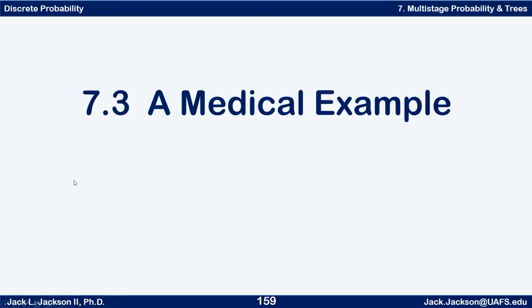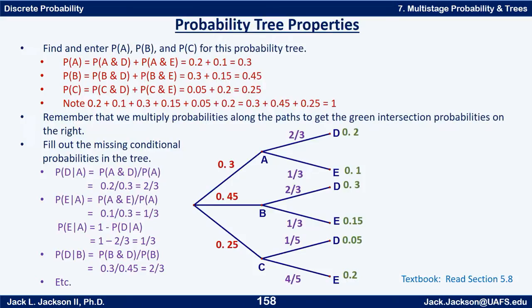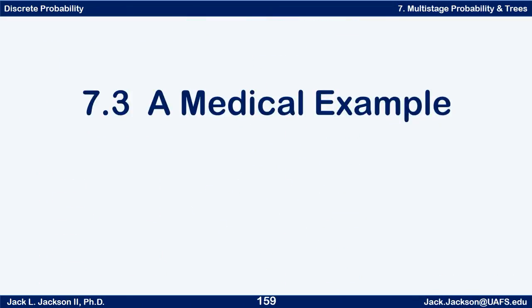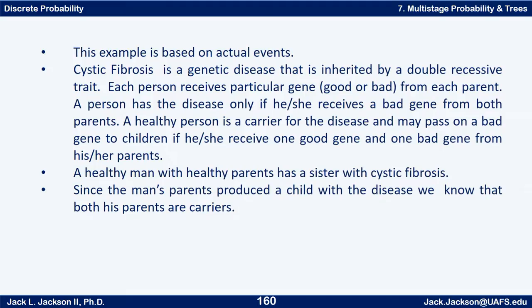This is Jack Jackson. We're going to look at applying probability trees to a real-world medical example. This example is based on some actual events. Cystic fibrosis is a genetic disease that's inherited by a double recessive trait.